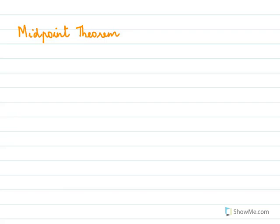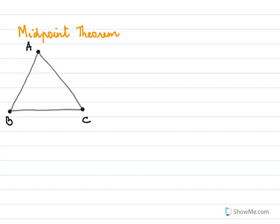We'll now learn about the midpoint theorem. Here is a triangle A, B and C. We have two midpoints: one midpoint of AB and one midpoint of AC. The midpoint of AB I will call P and the midpoint of AC I will call Q.